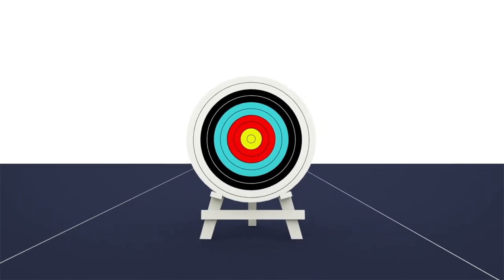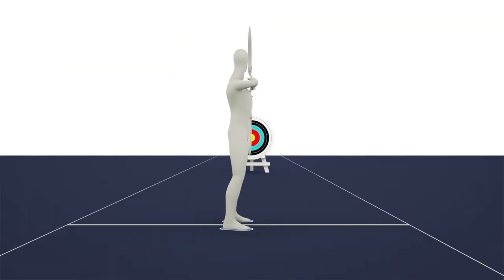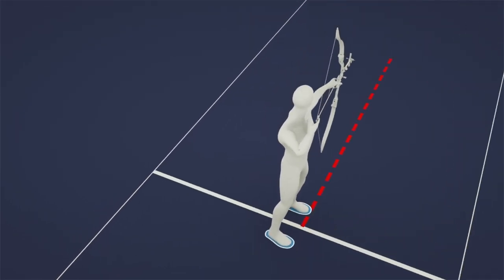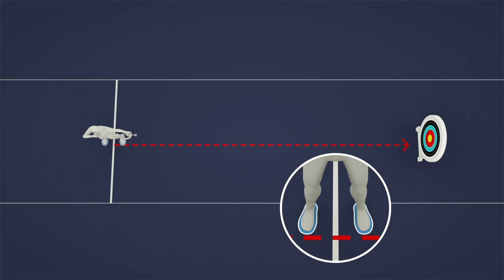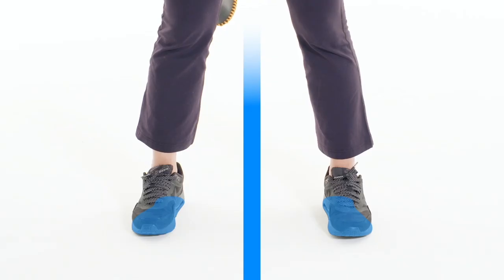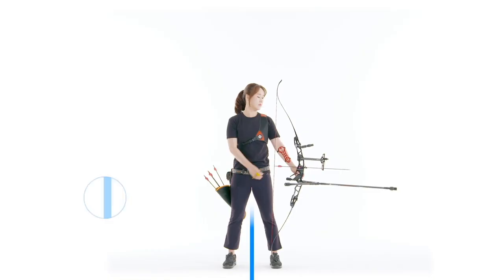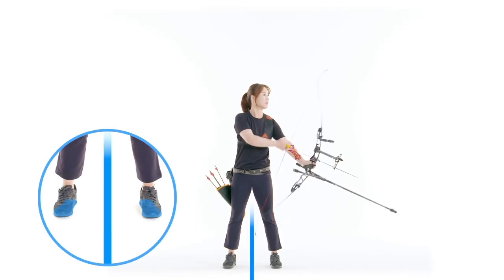Square stance is used to set an archer's basic posture. Imagine a line coming from the centre of the target perpendicular to the shooting line. The centre of the archer's feet should be placed on that line, either side of the shooting line. The distance between their feet should be no wider than the width of their shoulders.